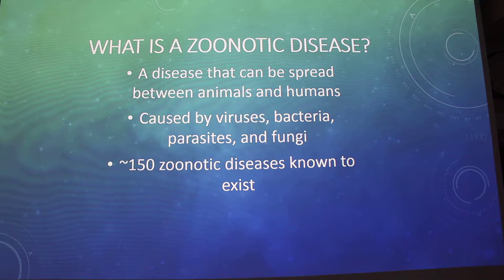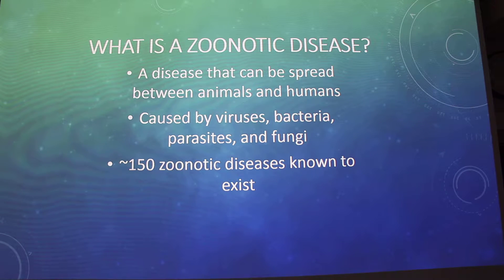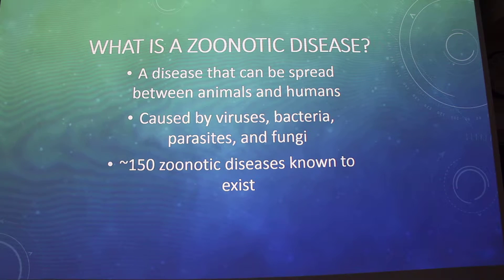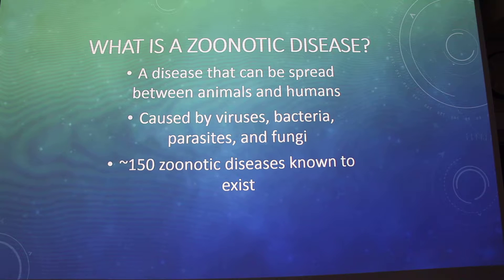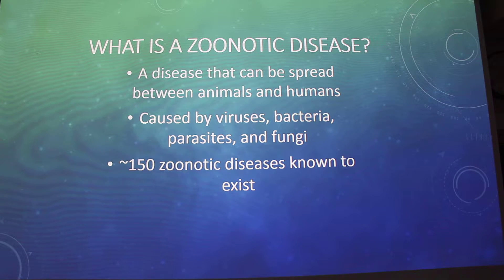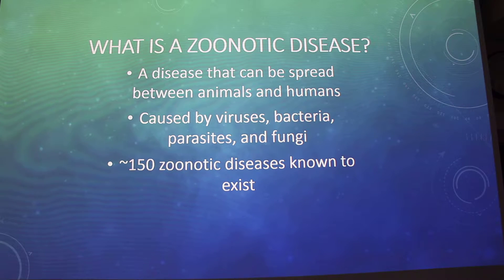Okay, so what is a zoonotic disease? Everybody usually knows it's a disease that can be spread between animals and humans. It's caused by — it can either be viruses, bacteria, parasites, or fungi. And there's approximately 150 zoonotic diseases known to exist; I've seen around the 200s as well, so around 150 to 200 is generally accepted.